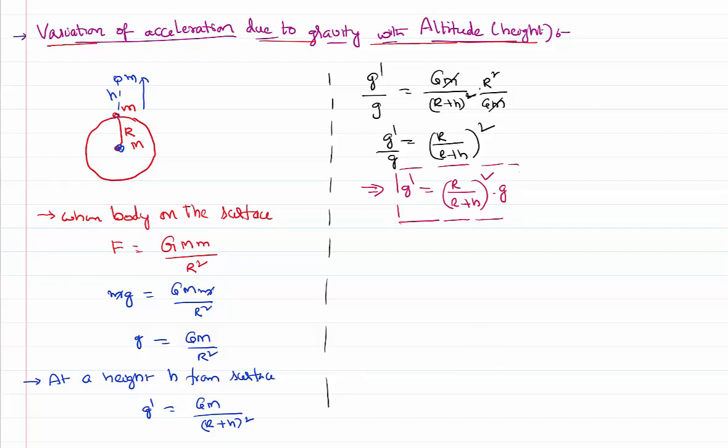But let us start writing a kind of constraint or a condition. Suppose you have gone to a height which is very small. In that case, I want to write this equation once again. I can write g dash by g as R by R plus h whole squared. By dividing with R both in numerator and denominator, it will be 1 by 1 plus h by R whole power minus 2.